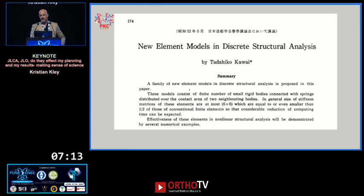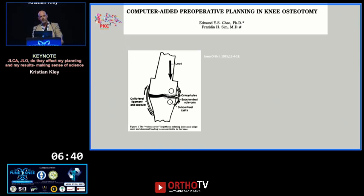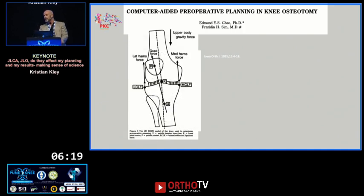This is also remarkable work: Tadahiko Kawaii was one of the forefathers of finite element analysis, working mainly in car engineering and still at the University of Tokyo. He developed the concept of rigid spring models. Edmond Shao, a bioengineer at the Mayo Clinic, recognized this and transferred it to a rigid bony spring model. He constructed a spring model, measured all forces around the joint, and fed the data into a computerized software system called Oasis — the first AI program that taught us where to put our corrections.